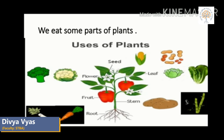Students, we eat some parts of plants. For example, we eat some roots like carrot and beetroot, some stems like potato, some flowers like cauliflower and broccoli, some leaves like cabbage, some seeds like corn, wheat and rice, and some fruits like mango, apple, and so on.